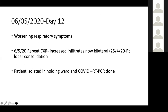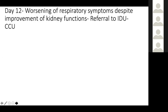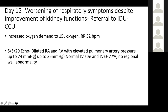She remained on the ward and on day 12 began to have worsening respiratory symptoms. Chest X-ray infiltrates were now bilateral — previously only right lobe consolidation. At that point, COVID needed to be ruled out and she was isolated. She was referred to the infectious disease unit and CCU due to increased oxygen demand at 15 liters and increased respiratory rate. An echo showed dilated right atrium and ventricle with elevated pressures up to 74mmHg, but normal systolic function. The COVID test also turned out positive.